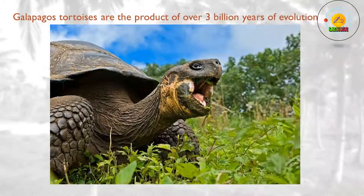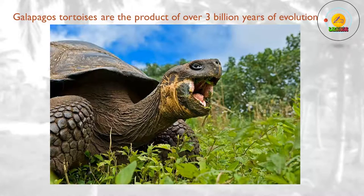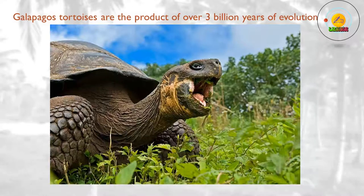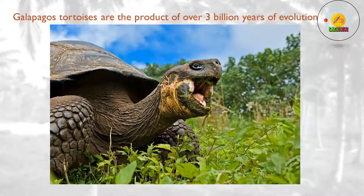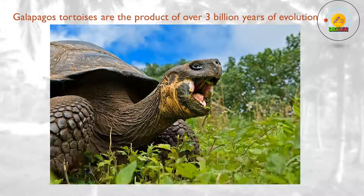There are all sorts of ways to reconstruct the history of life on Earth. Pinning down when specific events occurred is often tricky, though. For this, biologists depend mainly on dating the rocks in which fossils are found, and by looking at the molecular clocks in the DNA of living organisms.